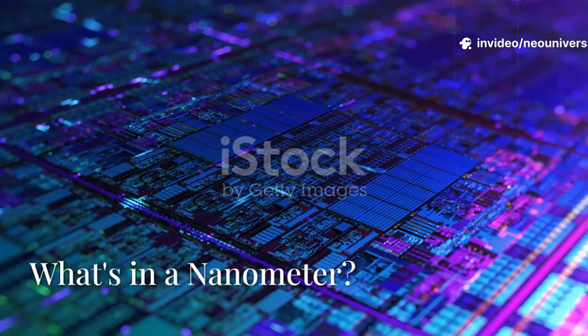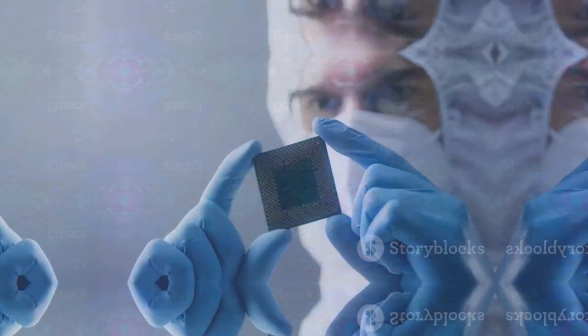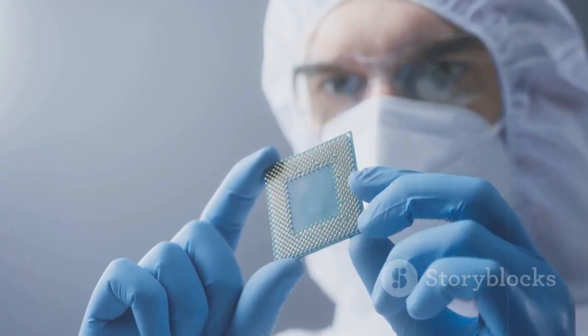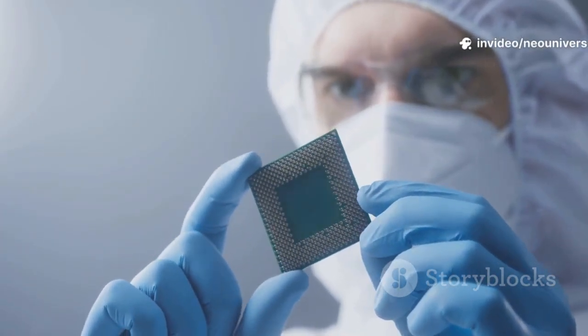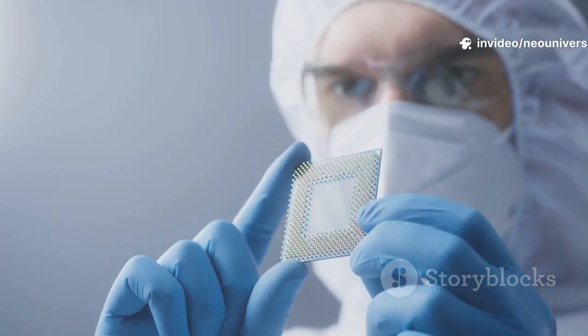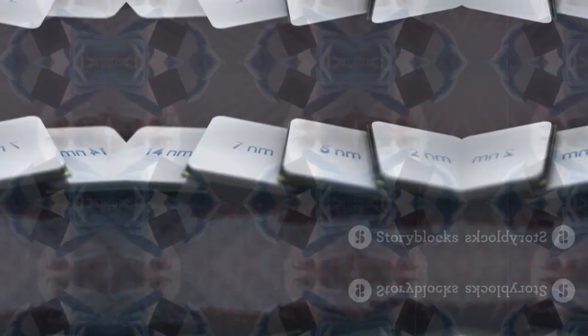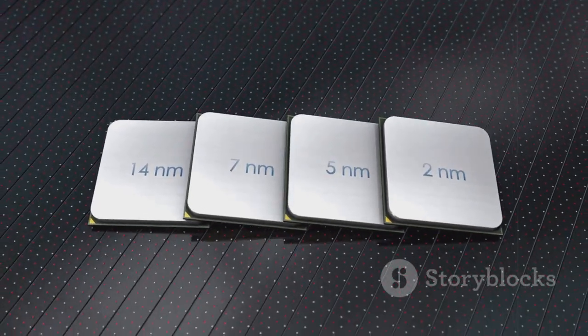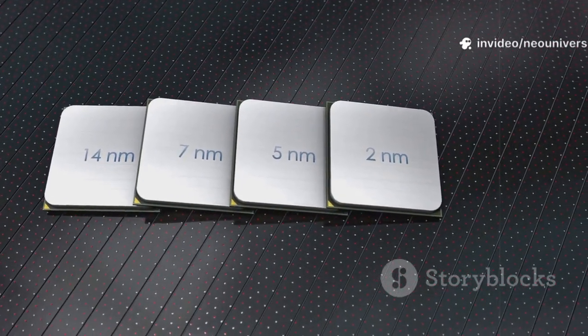Let's decode the nanometer race, a competition that's shaping the future of technology as we know it. Those numbers, 7, 5, 3 nanometers, refer to the size of a chip's tiniest components, transistors, the microscopic on-off switches that form the backbone of every digital device you use. The smaller the number, the more transistors can be packed onto a single chip, dramatically boosting speed, efficiency, and computing power.